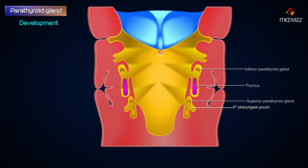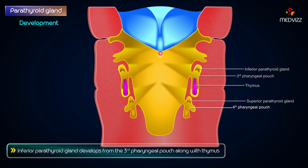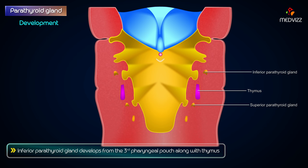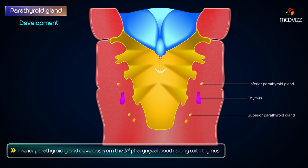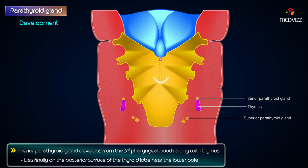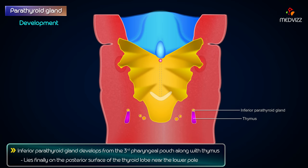The inferior parathyroid gland develops from the third pharyngeal pouch along with the thymus. As the thymic diverticulum migrates inferiorly in the neck, it pulls the inferior parathyroid with it. Consequently, the inferior parathyroid comes to lie finally on the posterior surface of the thyroid lobe near the lower pole.